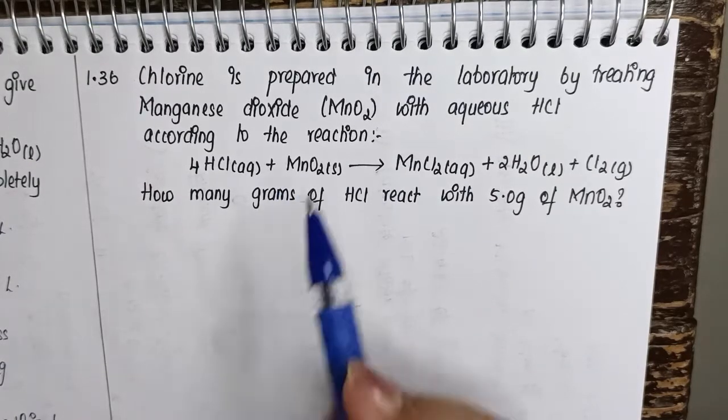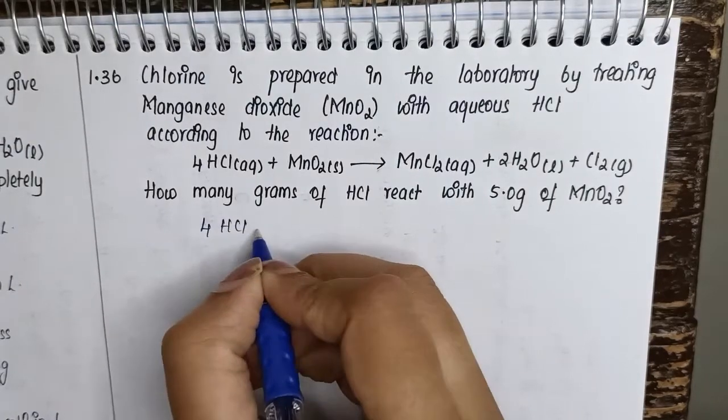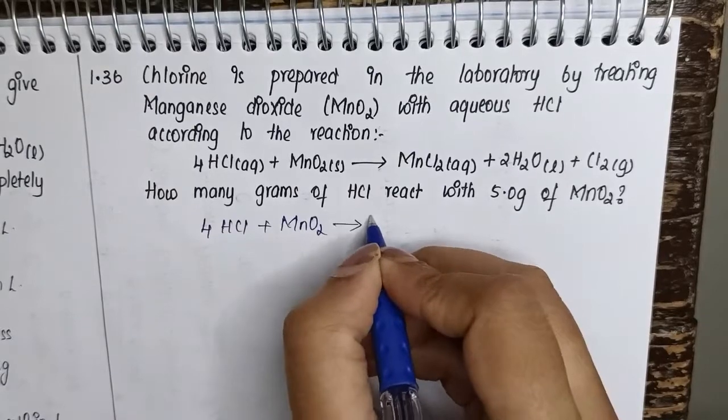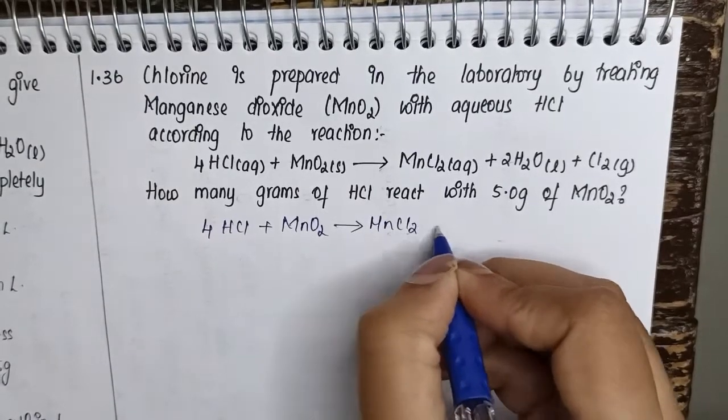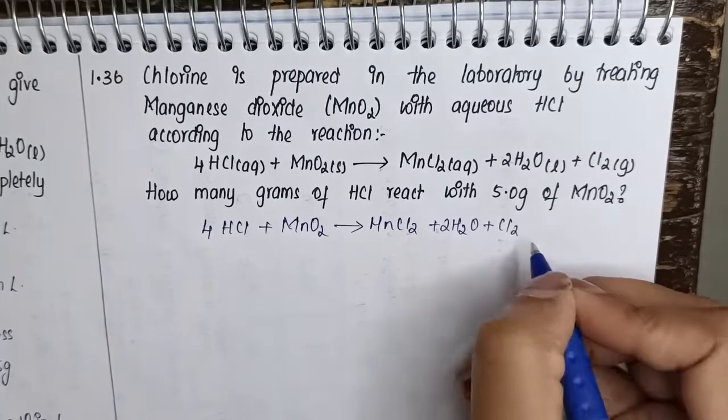So first we will write down this equation. So 4HCl plus MnO2 giving MnCl2 plus 2H2O plus Cl2 molecule.